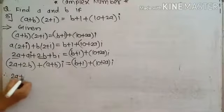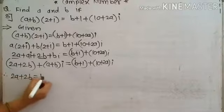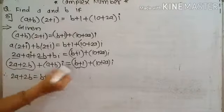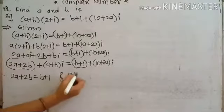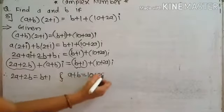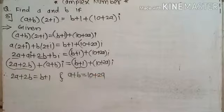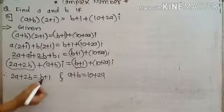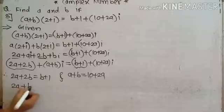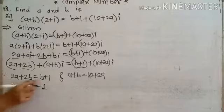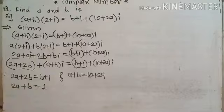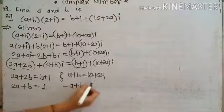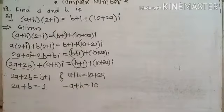Comparing real to real: 2a plus 2b is equal to b plus 1. Comparing imaginary to imaginary: a plus b is equal to 10 plus 2a. Rearranging the first equation, moving b to the left: 2a plus b is equal to 1. Rearranging the second equation, moving 2a to the left: minus a plus b is equal to 10.